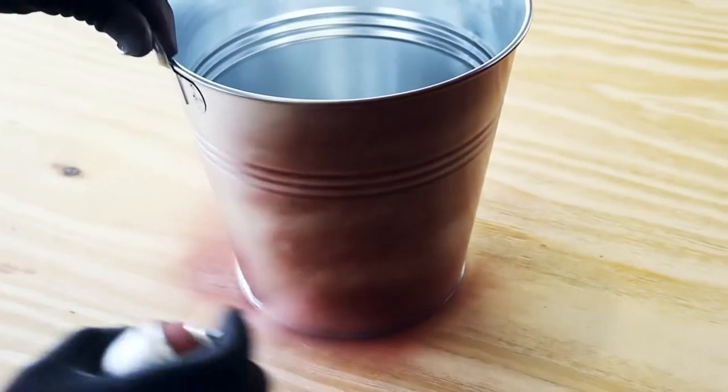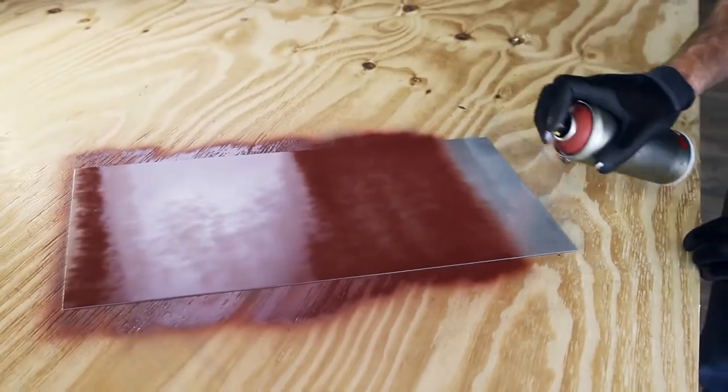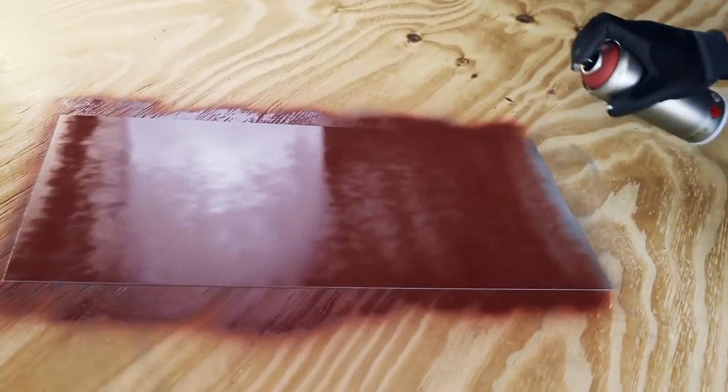Apply Montana Metal Primer Spray at a distance of 20 centimeters from substrate. Apply in multiple layers, minimum 2 to 3, alternating between vertical and horizontal application.